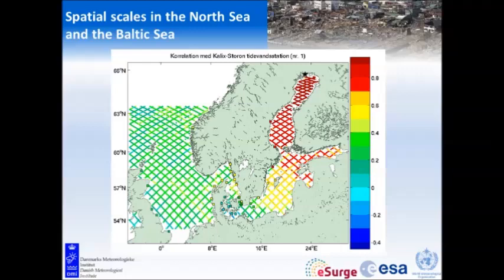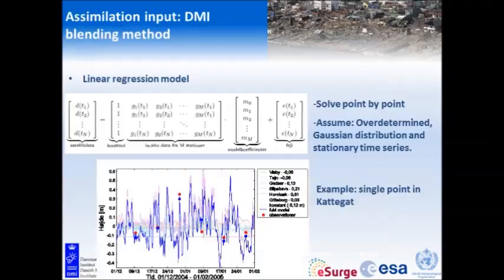We used these correlation patterns to select which tide gauges to use in our statistical model — selecting tide gauges that would not be too correlated with each other. Then we set up a linear regression model taking the satellite data and saying there should be a linear combination: we should be able to describe the satellite data at one point by a linear combination of tide gauges surrounding that point. Taking the inverse of the model gives us model coefficients.